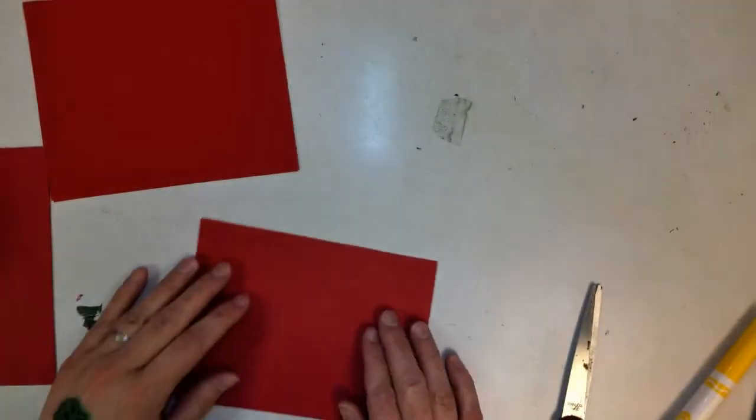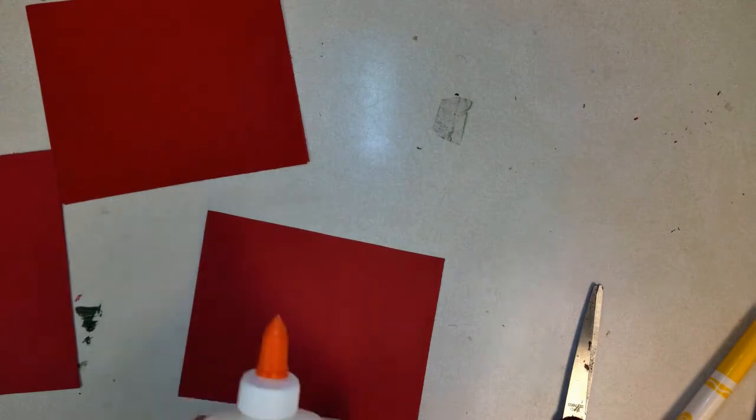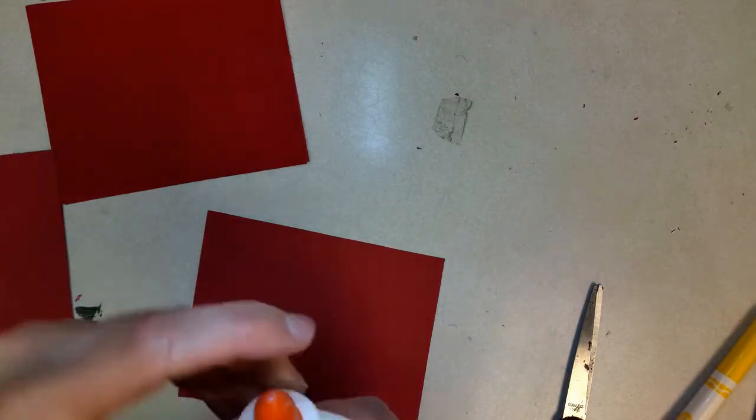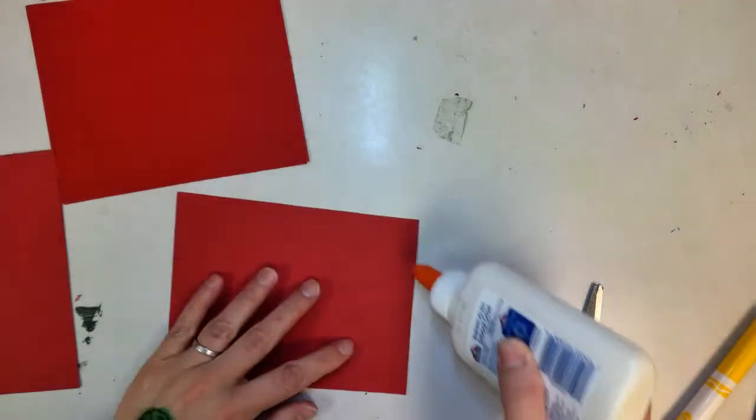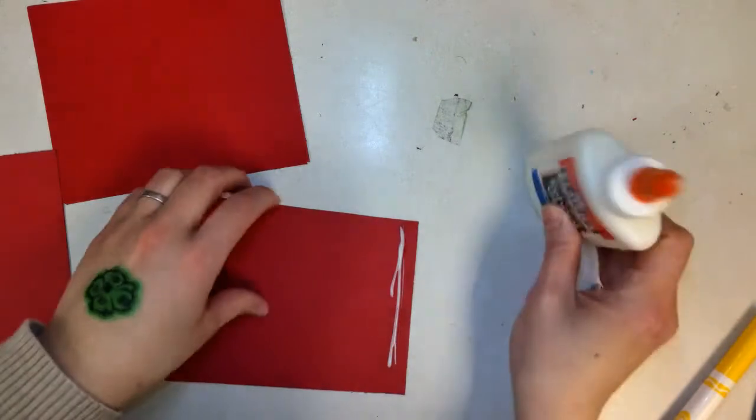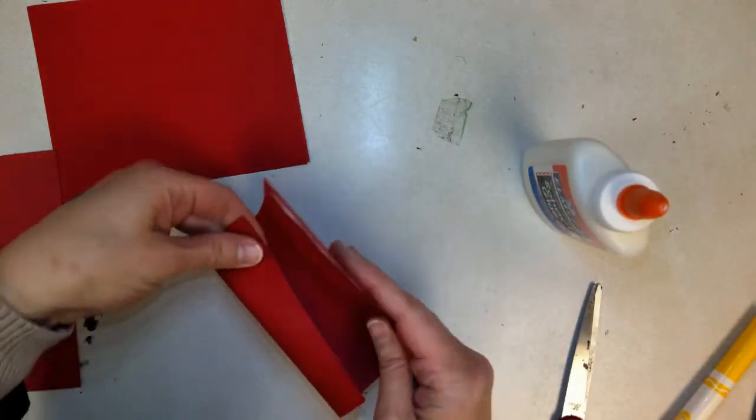This is how you make a cylinder. Make sure your glue can breathe by squeezing it and that there's no glue on the top. Put a line of glue, not too much, on one side, and fold it in on itself.